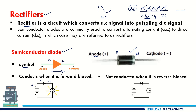The diode conducts when it is forward biased — meaning the P-end is connected to the positive terminal and the N-end to the negative terminal. When it is reverse biased, the negative terminal is connected to P and the positive terminal to N, so there is no current flow and the diode is off.